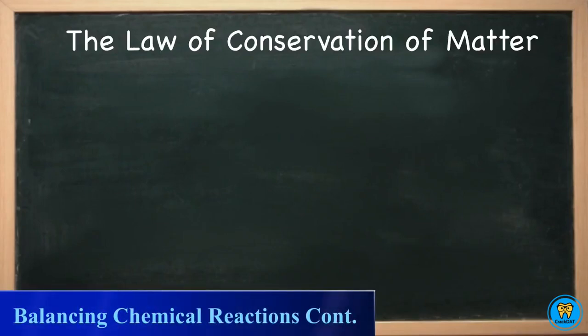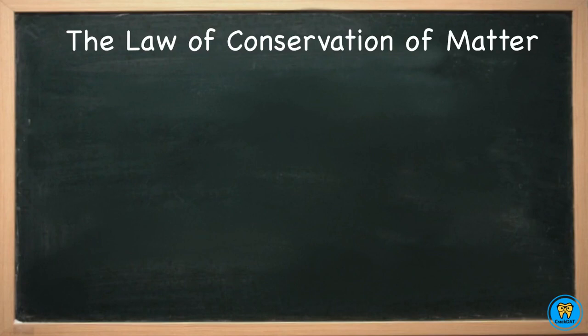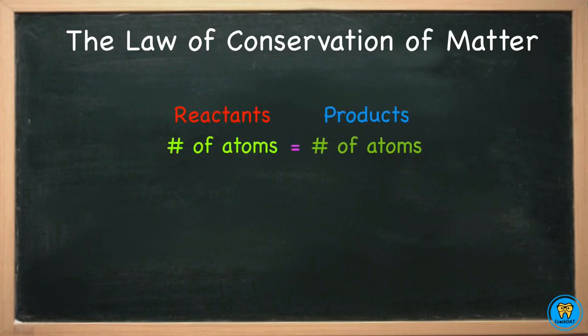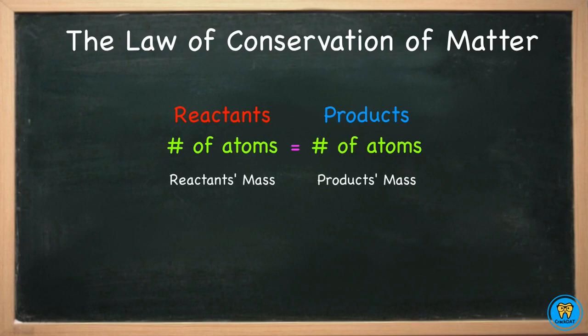Previously we discussed the law of conservation of matter. We quickly identified that the number of atoms on the reactant side should equal the number of atoms on the product side. Since we've proven this to be true, it only makes sense that if we added the mass of the reactants and the mass of the products, we would see that they are equal.